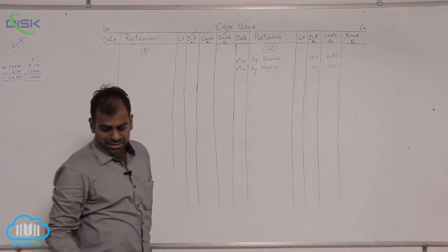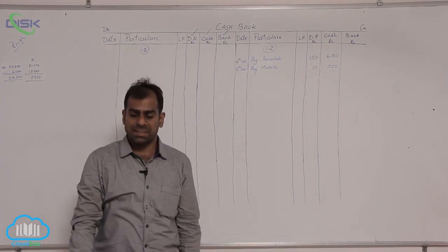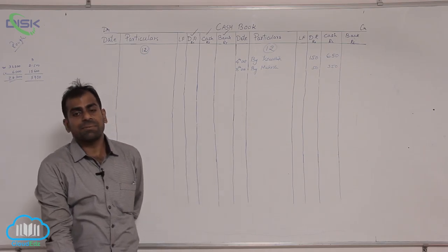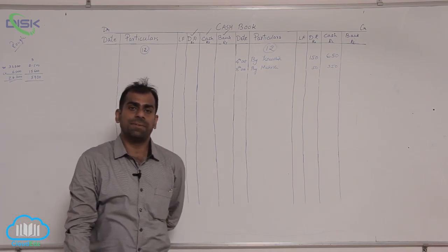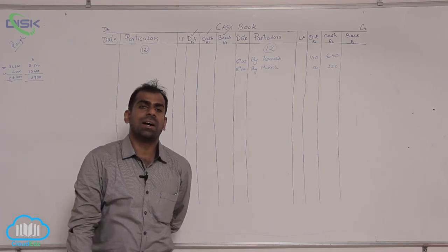Now moving on to the next transaction on 10th, it is received check from Prabhu, 1450, discount allowed 150.